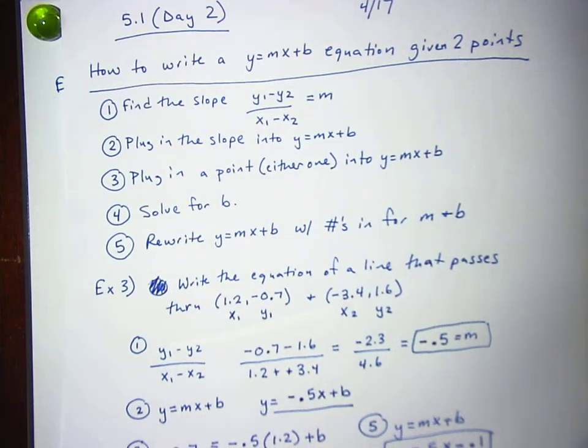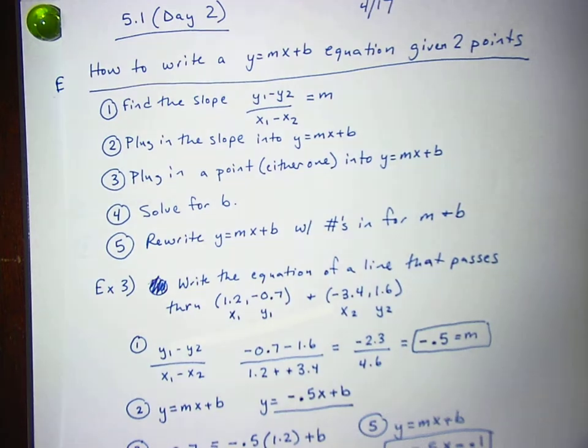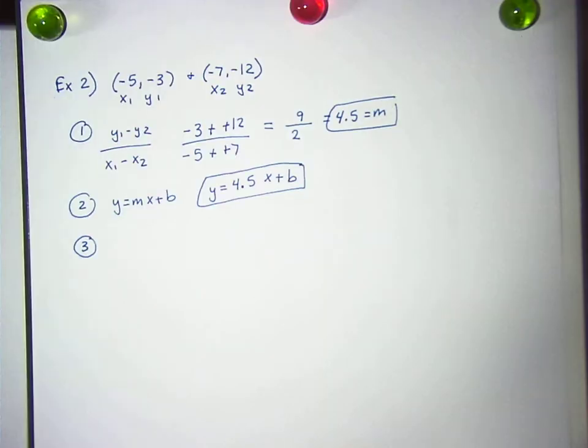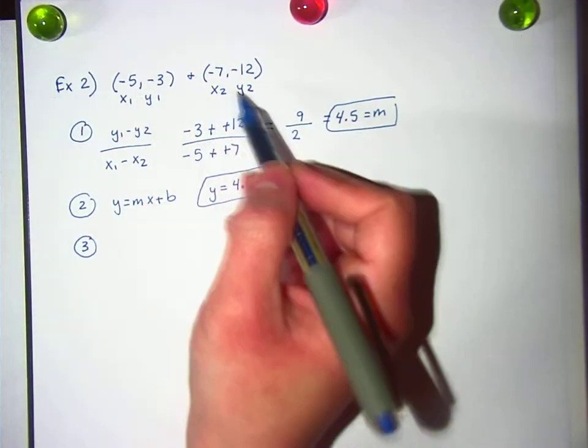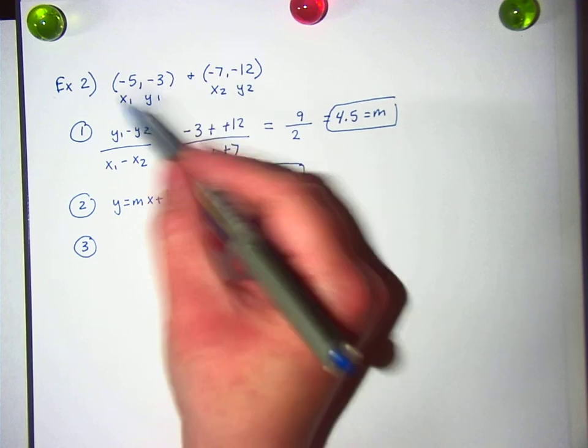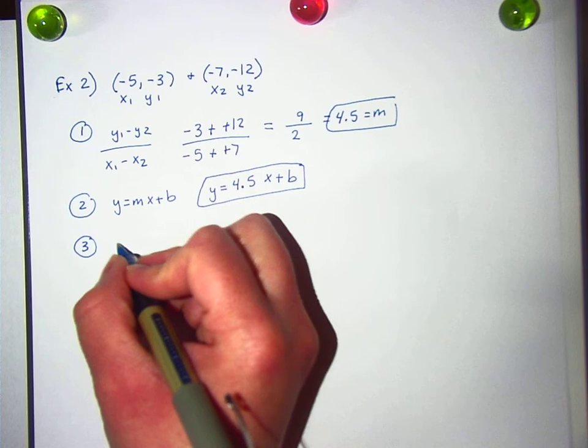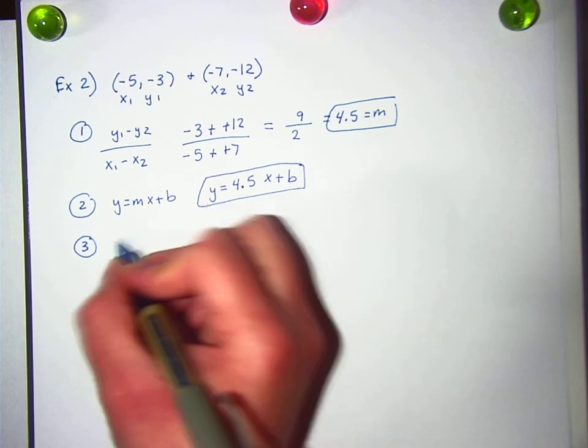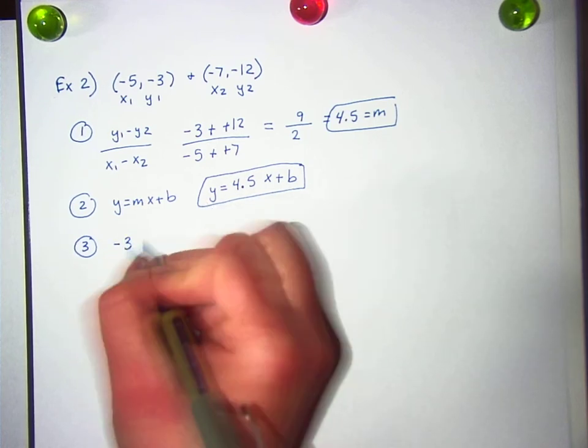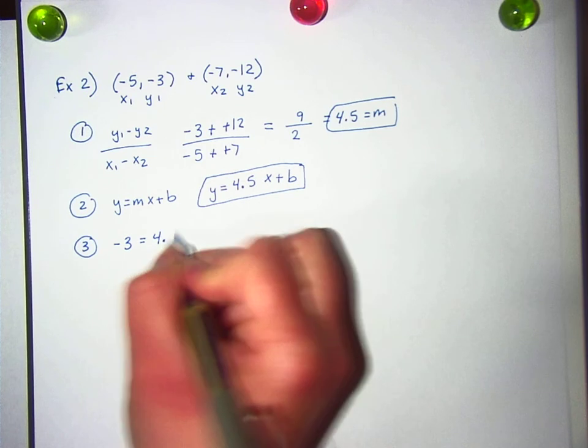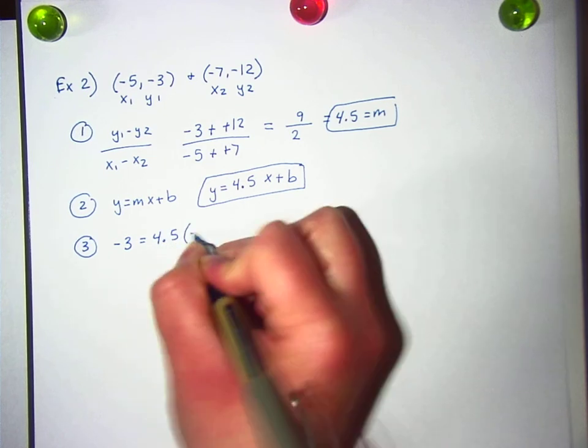All right. Next, we have to, for step 3, plug in a point. It doesn't matter which one, into y equals mx plus b. So again, pick the one that you think is easier. I think I'm going to go for the first one again because they're smaller numbers. Use this equation right here. So for y, it's negative 3 equals, the slope is 4.5 times x, which is negative 5.